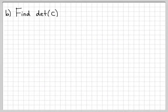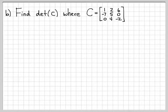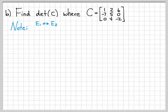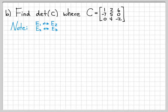Let's do another little example. Let's find the determinant of C, where C is this matrix. Note that matrix C looks just like matrix A, except two things have happened: it's as if I've taken row one and switched it with row two, and then taken row two and switched it with row three. So it's like two row swaps have been done on A to create matrix C.